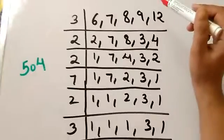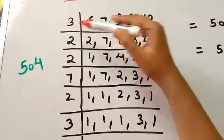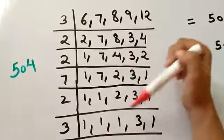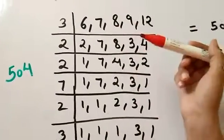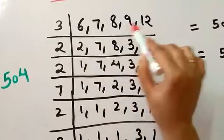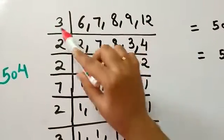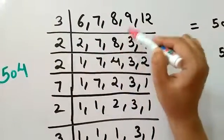So calculate the LCM of 6, 7, 8, 9, and 12. This is how you will calculate the LCM. Let's see how we will do it: 6, 7, 8, 9, 12. Then divide by 3 to get 2, 7, 8, 3, 4.